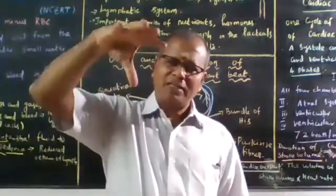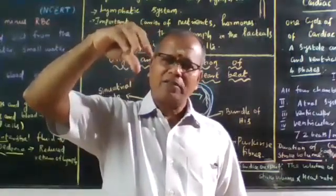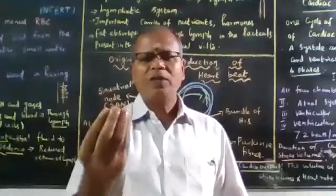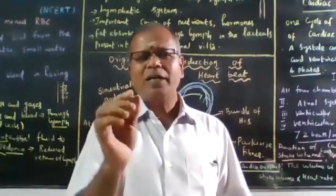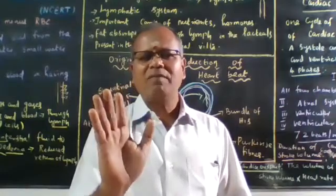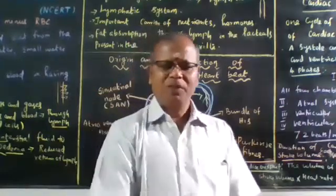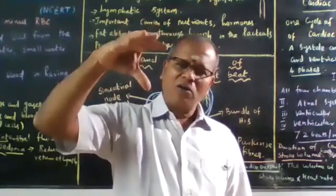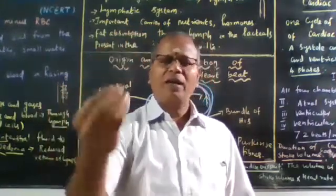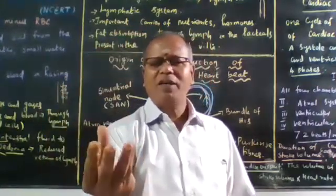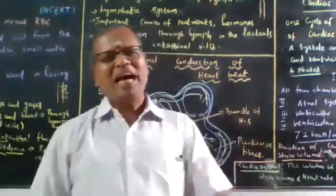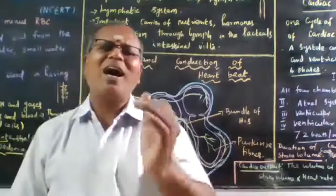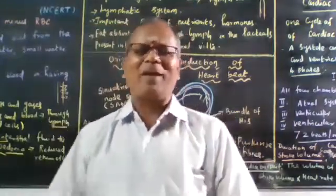Atrial diastole, atrial systole, ventricular diastole, ventricular systole, and a short gap - collectively known as heartbeat. Auricle expansion, auricle contraction, ventricle expansion, ventricle contraction, and a short interval - all of this together is a heartbeat.